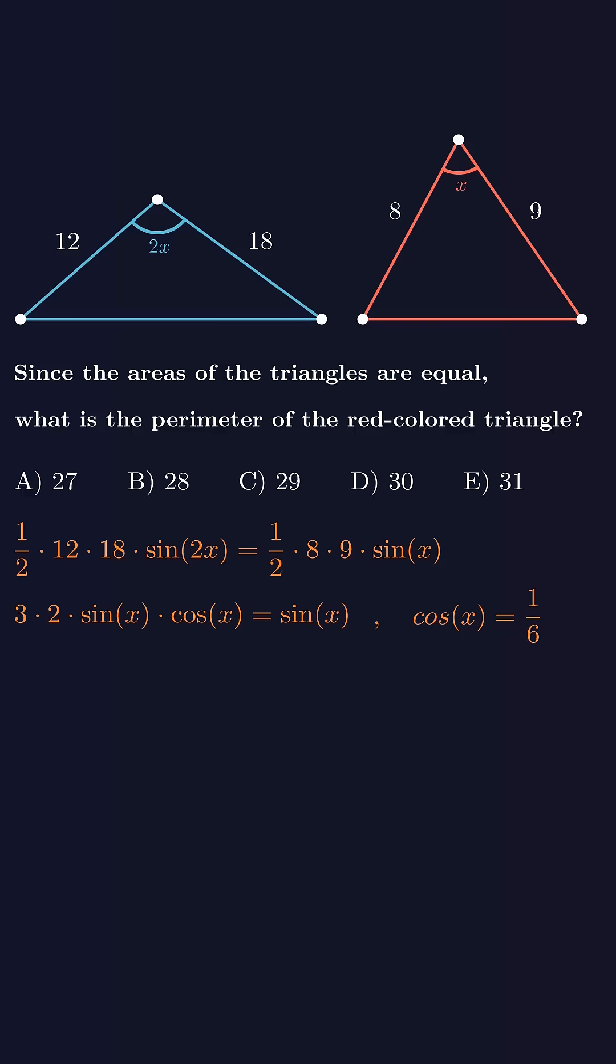To find the unknown side, we use the cosine rule. Let's call the unknown side in the red triangle a. The cosine rule goes like this: a squared equals eight squared plus nine squared minus two times eight times nine times the cosine of the angle. We already found that cosine of the angle is one over six.